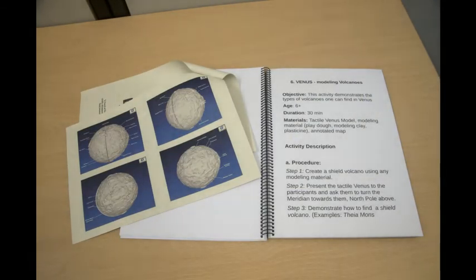For this activity, you can also use the annotated map with snapshots of the model, where the locations of important features have been marked.